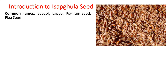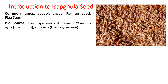Isabghula seeds are commonly known as Isabghul, Indian Psyllium, Psyllium seeds, or Flea seeds. They are obtained as dried and ripe seeds of Plantago ovata, Plantago afra, or Plantago indica, belonging to the family Plantaginaceae.